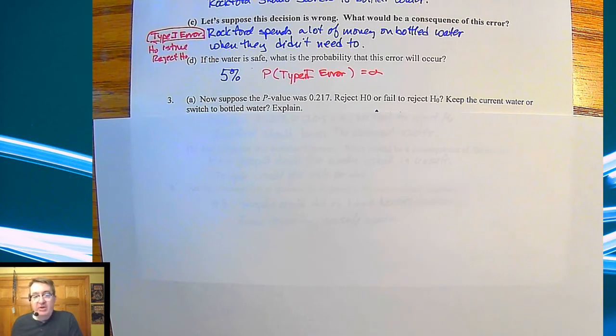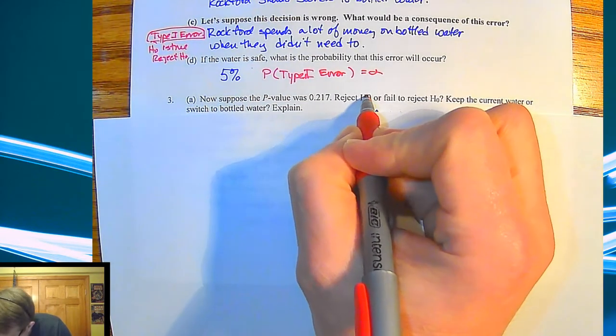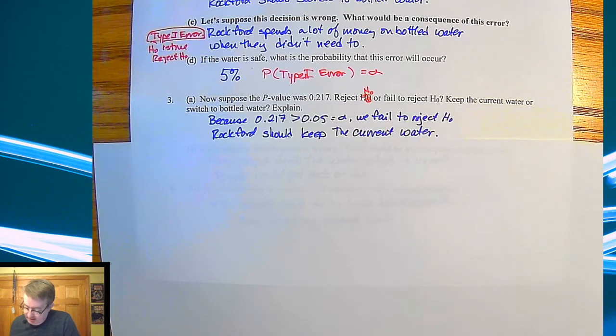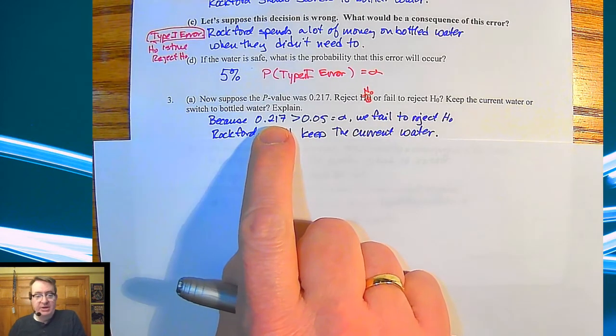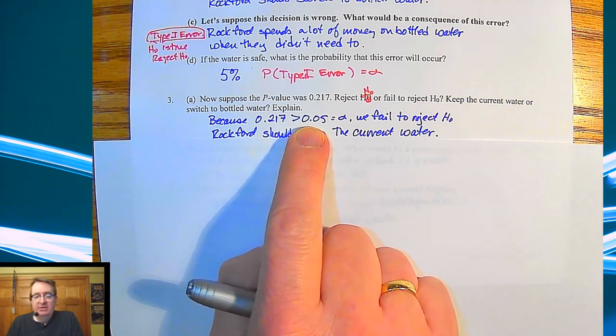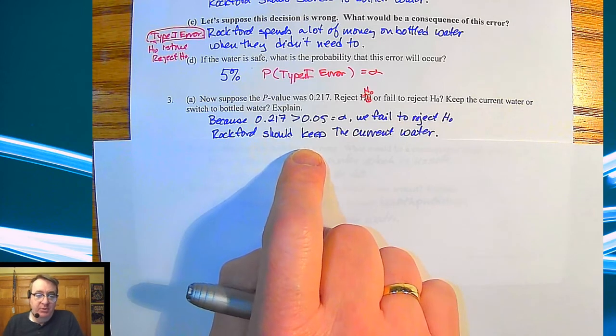Now let's say the p-value is actually 0.217. So a bit over 20%. So do we reject or fail to reject the null hypothesis? Do we keep the current water, or do we go to bottle water? So if it's 0.217, because 0.217 is bigger than our alpha value of 5%, we fail to reject the null hypothesis. According to what we're seeing here, everything's fine. Just one of those things looks bad, but the data says we're okay. Rockford should keep the current water.